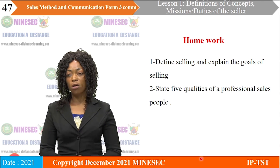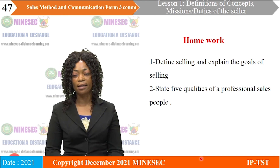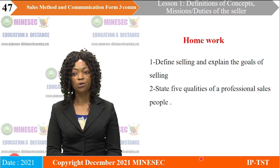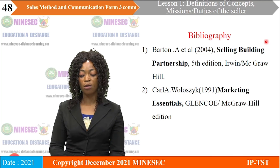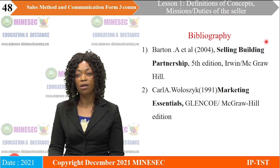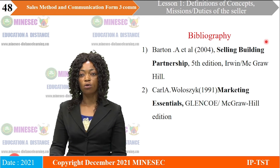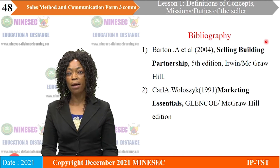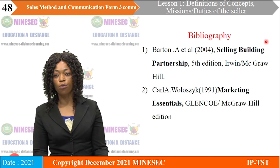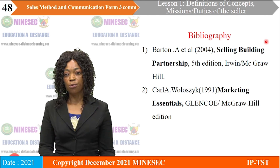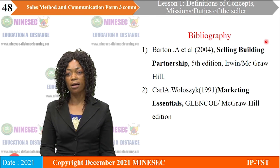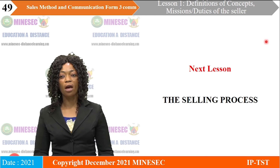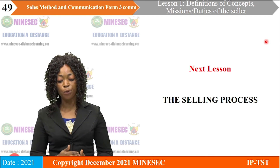Homework. For your homework today, I would like you to define selling and explain the goals of selling, and state five qualities of a professional salesperson. If you want to read further or ahead of the teacher, you can consult the following books: 'Selling: Building Partnerships' by Irwin McGraw-Hill, and you can also read 'Marketing Essentials.' For our next lesson, we are going to be talking about the selling process and the steps we have in the selling process.